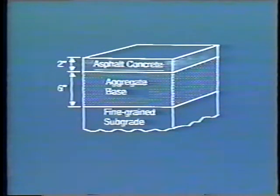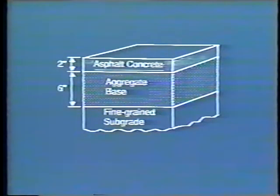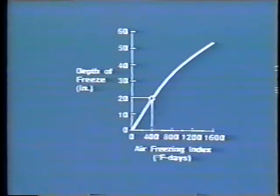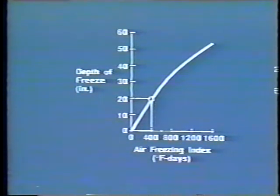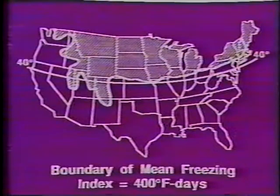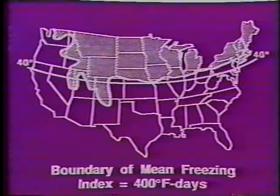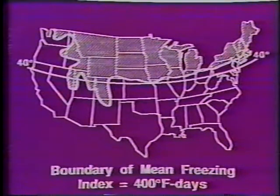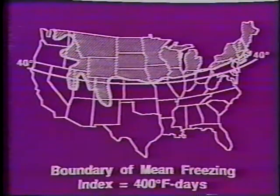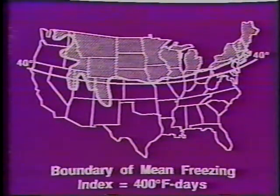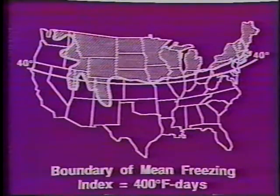The significance of the freezing index is shown here for a thin flexible pavement. The plot of freezing depth versus freezing index shows that a freezing index of 400 degree Fahrenheit days results in an estimated freezing depth of about 20 inches. This sketch of the U.S. shows the area where the average freezing index can be expected to equal or exceed 400 degree Fahrenheit days. Within the shaded area, freezing depths can be expected to exceed the total thickness of the pavement by a substantial amount, which may increase the need for road restrictions.